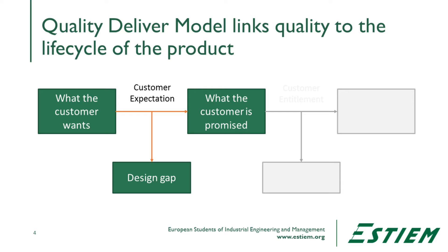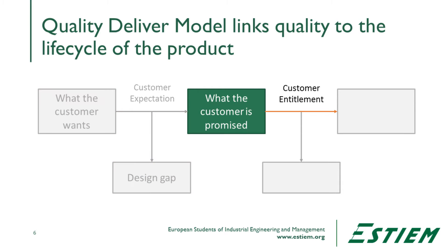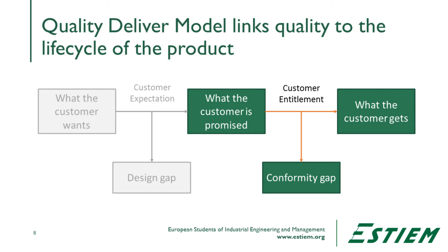We're setting a baseline — this is what we want to have in terms of deliverable to customers. The output of this then becomes an entitlement. When we make a promise, we should fulfill the promise. When we look at what the customer gets, we see there can be a gap in performance. This gap is between quality as promised — the one-dimensional quality feature — and what the customer actually gets. If we have any gap in performance, there is a gap in conformity.